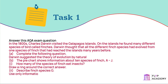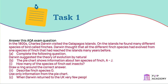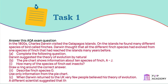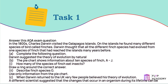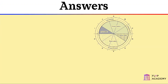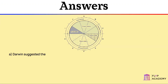C. When Darwin returned to the UK, very few people believed his theory of evolution. A different scientist suggested that the changes that occur in an organism during its lifetime can be inherited by its offspring. What was the name of this scientist? Tick one box. And here are the answers. A: Darwin suggested the theory of evolution by natural selection.